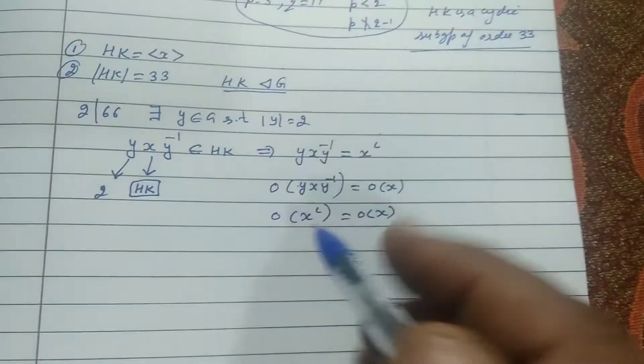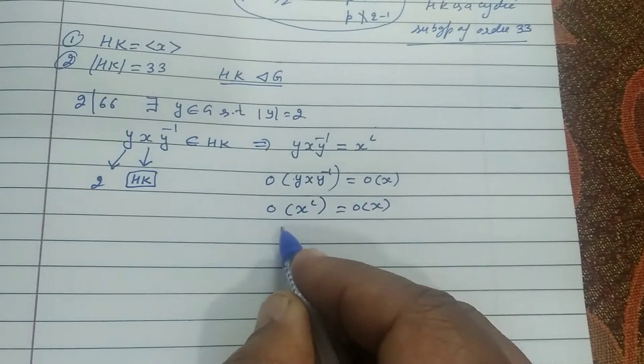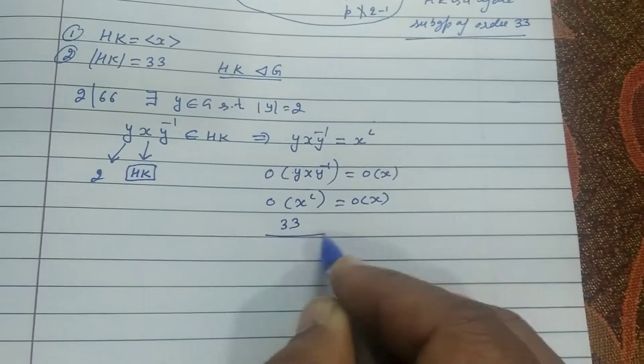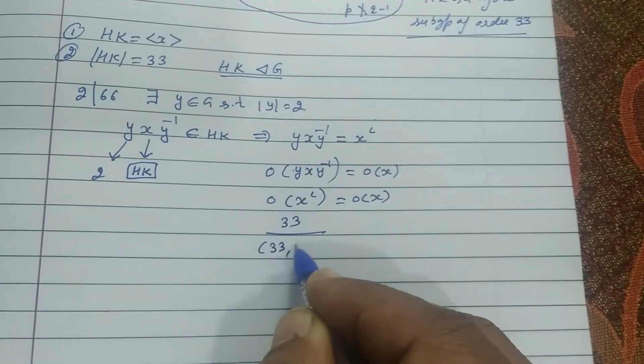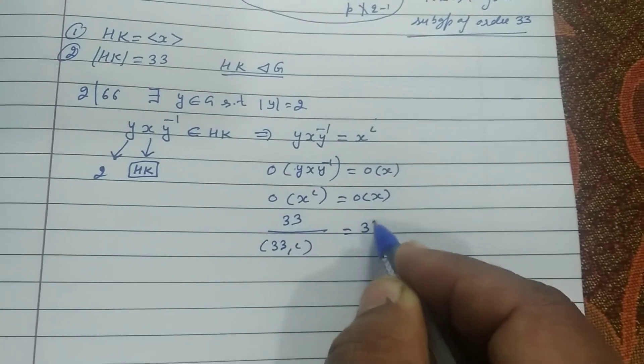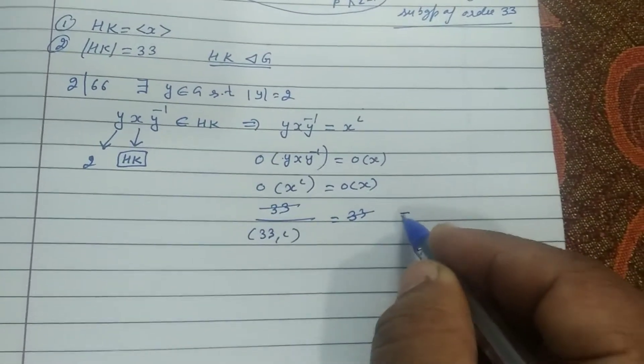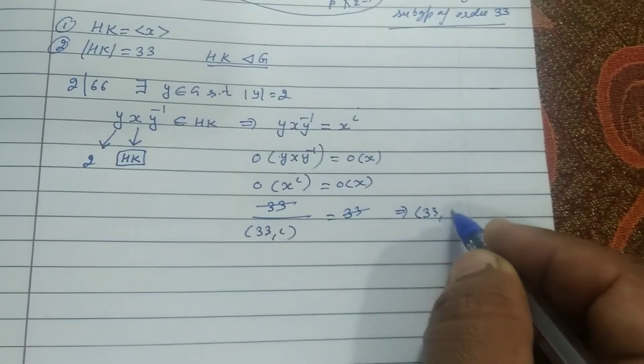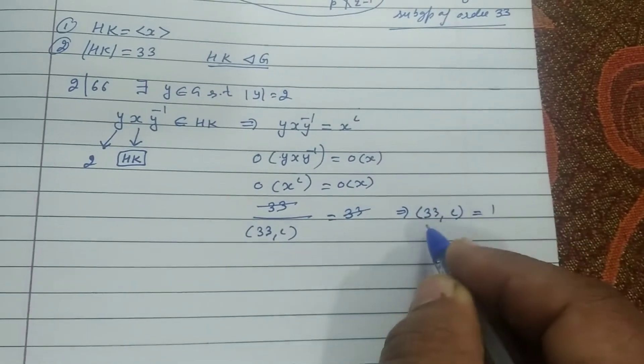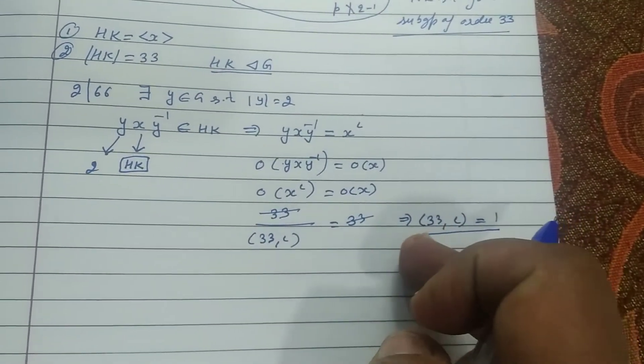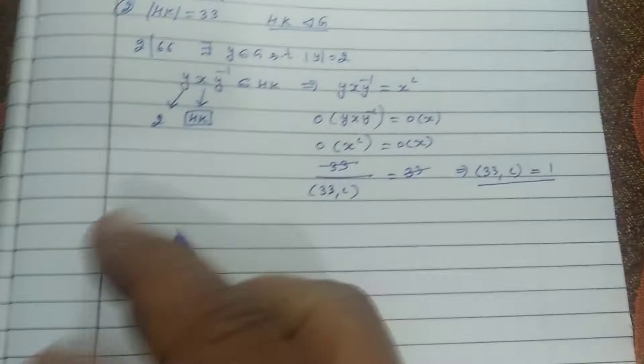Very good. Order of xⁱ is 33 divided by gcd of 33 and i. We can take only such values of i such that gcd of 33 and i is 1.